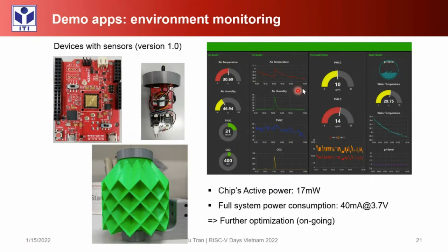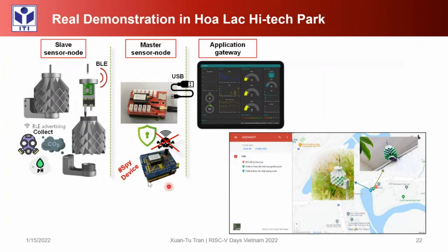Here is a user interface to monitor air quality, water quality, particulate matter, and so on. The chip power is 17 milliwatt and the full system power consumption is 40 milliampere at 3.7 volt. We think we can optimize further for power consumption by applying some software techniques such as standby and clock gating. Here is the real-world demonstration at Hoa Lac High-Tech Park, where we ran the system to monitor the lake and the building at the manufacturing area.